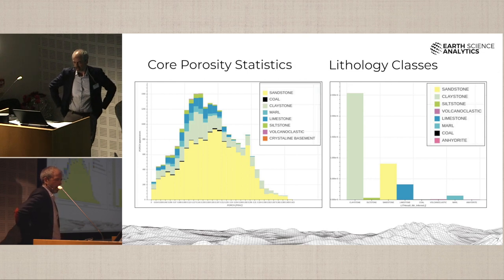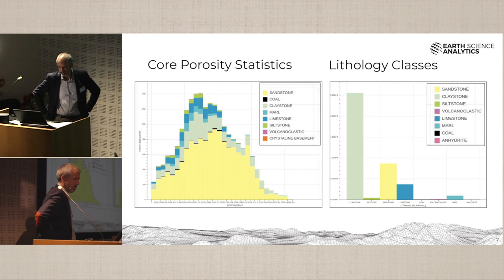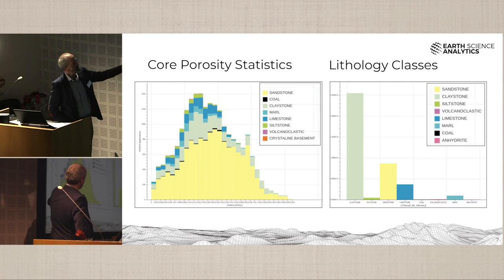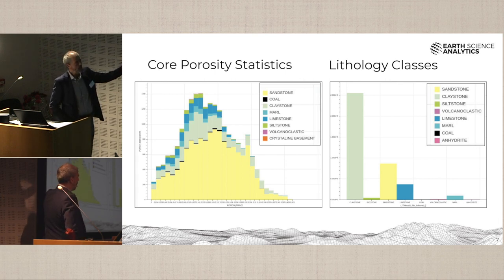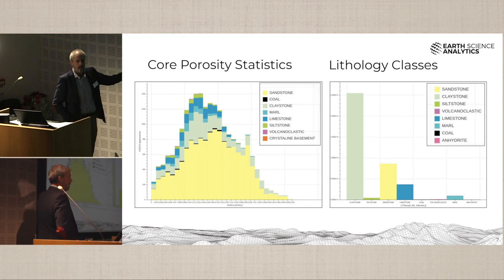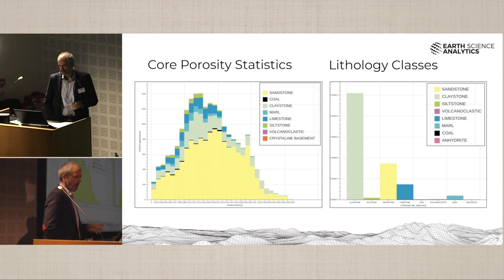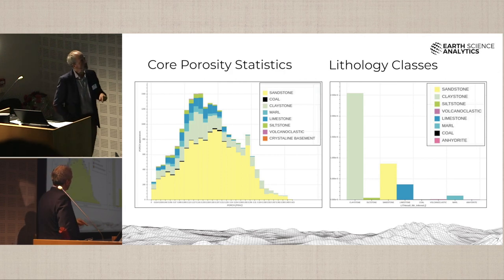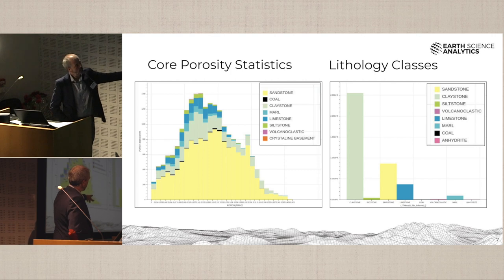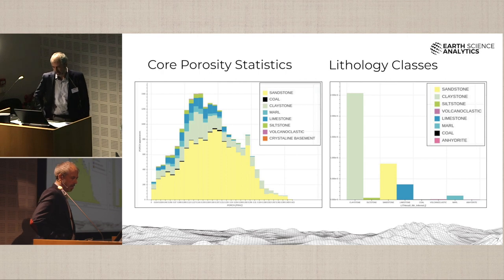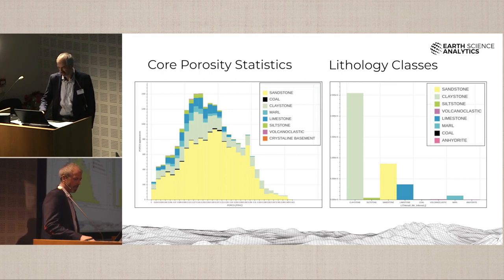Something about labels and where the ground truth information is coming from: our core porosities are obviously heavily biased towards the reservoir intervals. If we plot out core porosities coloured up with actual lithologies, we always see sandstone as dominant — we have a big bias towards the reservoir interval, and that's something we have to deal with. For the lithology classes, we used a TGS label set, and the histogram shows the class balance in that data set, so there's some balancing we could do to address inequalities in the label set.